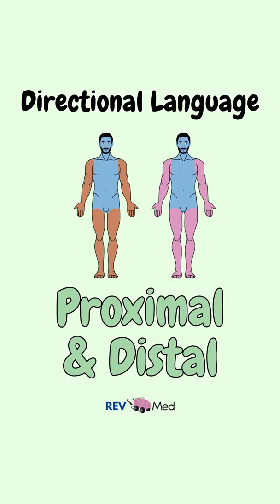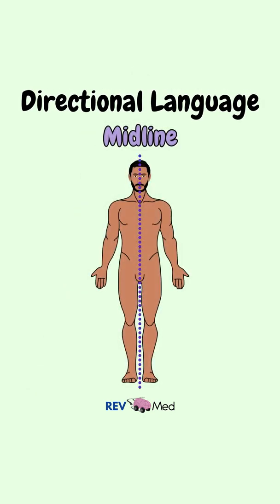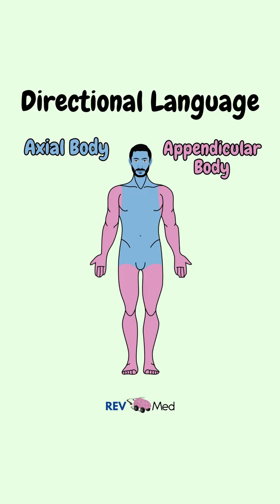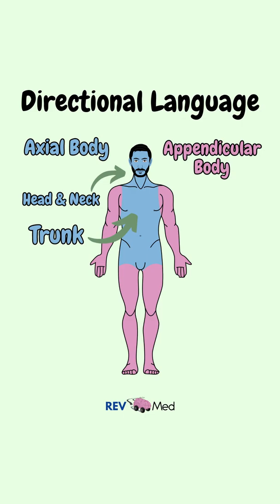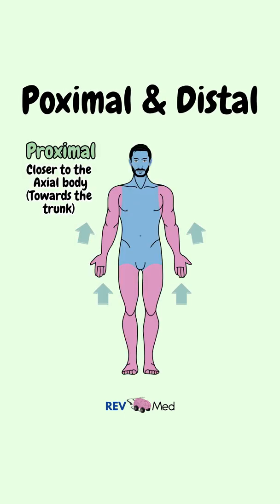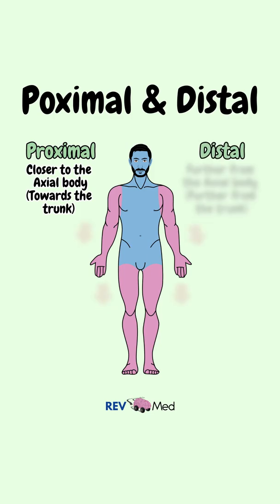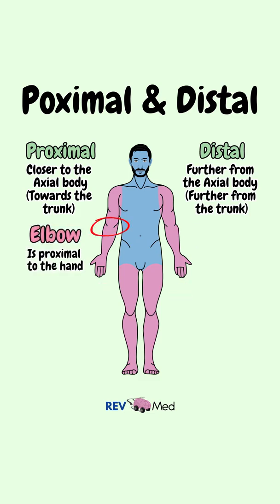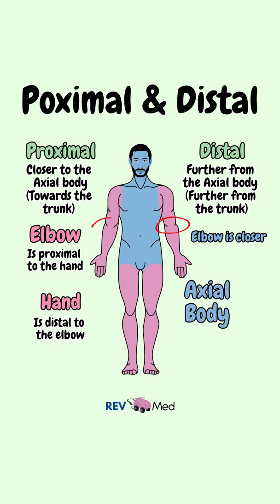Next we'll discuss the terms proximal and distal. Just like we saw the midline, we create a mental map of the axial body and the appendicular body. The axial body is the head, neck, and trunk. The appendicular body consists of the limbs added to our axial body. Proximal means closer to the axial body, towards the trunk and core. Distal means further from the axial body. So we can say the elbow is proximal to the hand, or the hand is distal to the elbow, because the elbow is closer to the axial body.